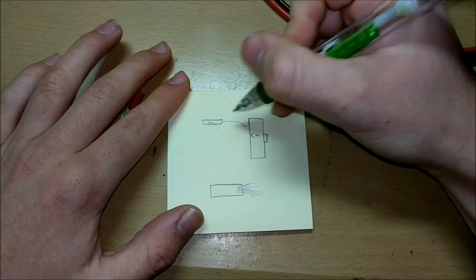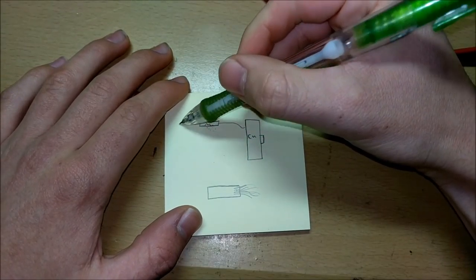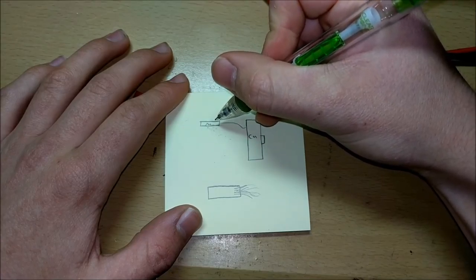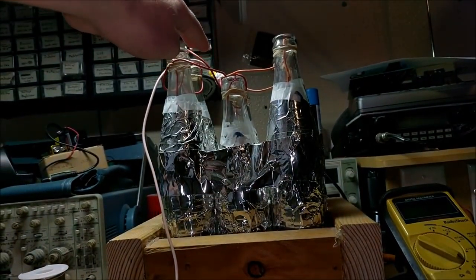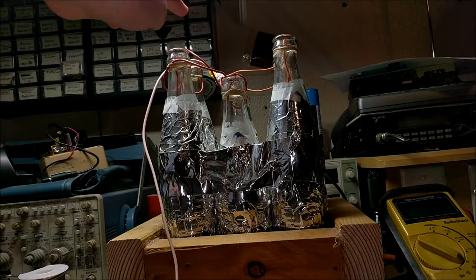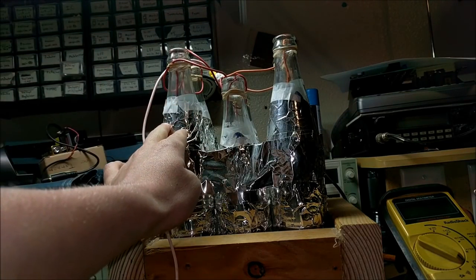Now, this sacrificial anode circuit only works when it's in something kind of like an electrolyte, like moist dirt, or in seawater, or something like that. Now, the issue that I'm having with this capacitor bank is that the part where the corrosion is happening, there's no electrolyte. All the electrolyte is inside all the bottles.